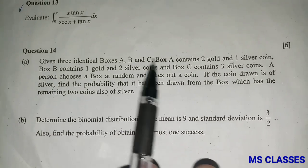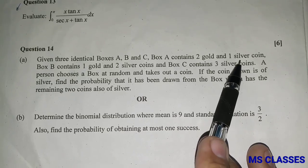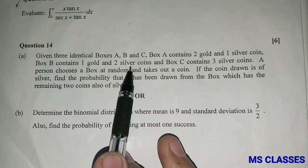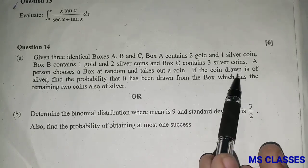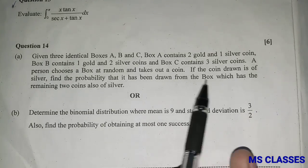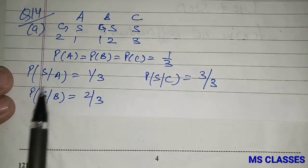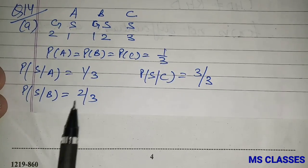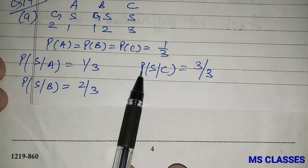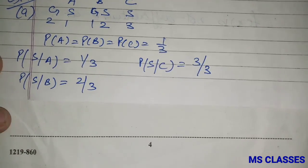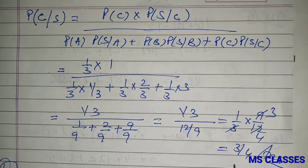Box A has 2 gold and 1 silver coin; Box B has 1 gold and 2 silver; Box C has 3 silver. A person picks a box at random and draws a coin. Given the coin is silver, find the probability it came from the box with the remaining two also silver (i.e., Box C). P(A) = P(B) = P(C) = 1/3. Using Bayes' theorem with P(S|A), P(S|B), P(S|C) substituted, the answer is 3/4.